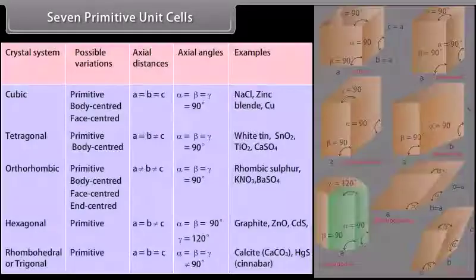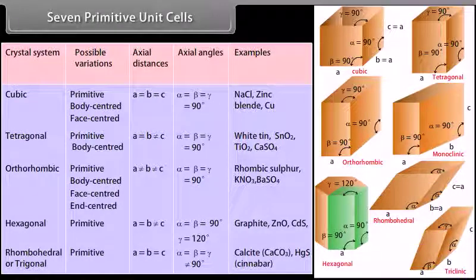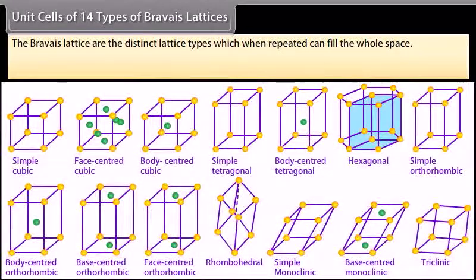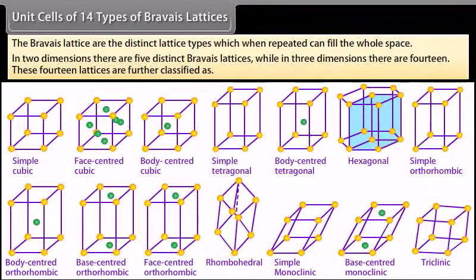There are 7 types of primitive unit cells. Their characteristics along with the centered unit cells they can form have been listed in the table. The Bravais lattices are the distinct lattice types which when repeated can fill the whole space. In 2 dimensions there are 5 distinct Bravais lattices, while in 3 dimensions there are 14.